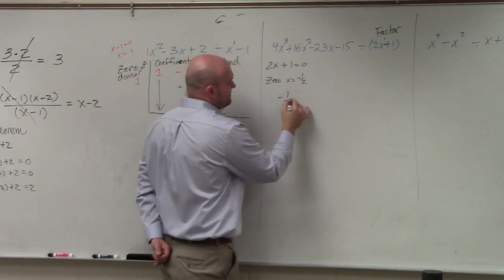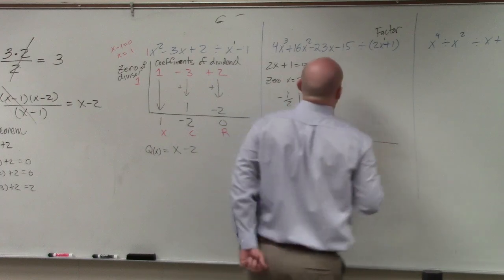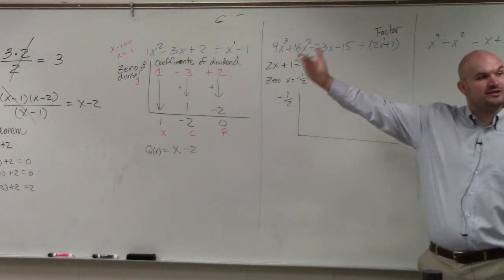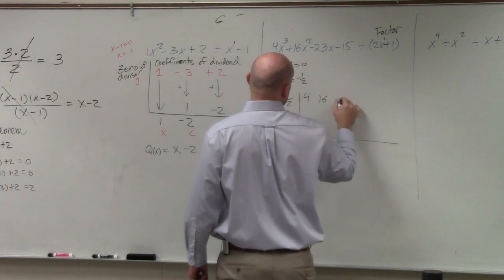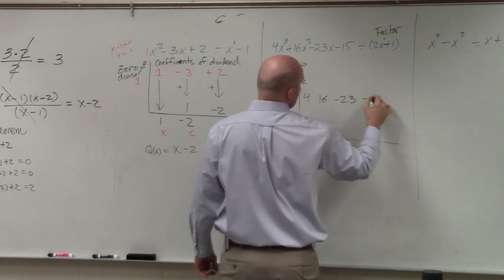So I write negative 1 half on the outside. And then I take the coefficients. I want to make sure that I am in descending power. So I have 4, 16, negative 23, and negative 15.